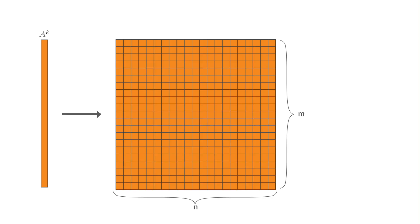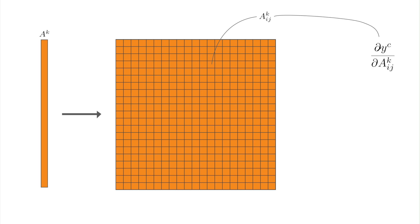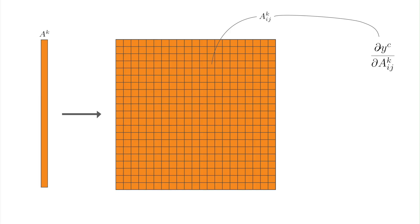Every feature map is a matrix of elements. The dimensions M and N will depend on how the previous layers have been pooled. A^KIJ is the value for an arbitrary element in the feature map. Using backpropagation, we can find the derivative of the logit Y^C with respect to an element of the feature map. This gradient tells us how much the logit changes with small changes in the element — larger gradients indicate that a particular element is important for the logit. By taking the average of all gradients, we can understand how important the entire feature map is.